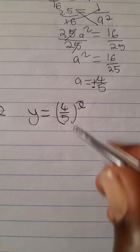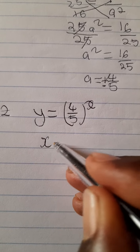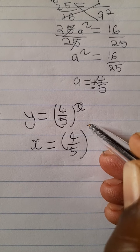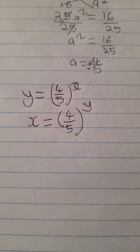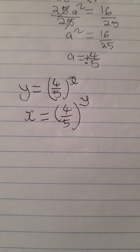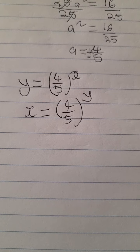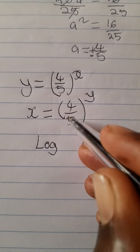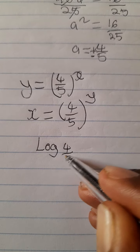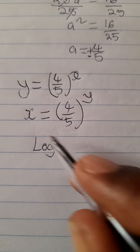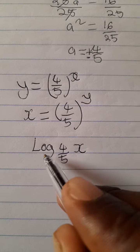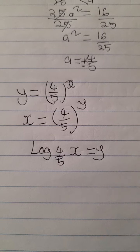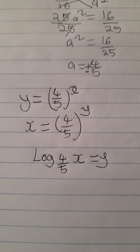We swap the coordinates: where there is y there will be x, giving us x equals 4 over 5 to the power of y. We're not done yet — the inverse of an exponential is a logarithm. So we write this in logarithmic form: log base 4 over 5 of x equals y. Since they said to leave the answer in the form y equals, our answer is y equals log base (4 over 5) of x.